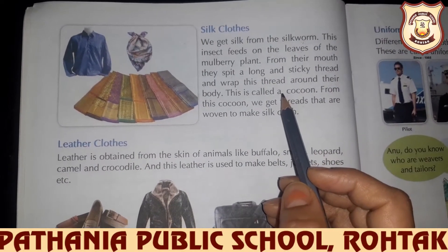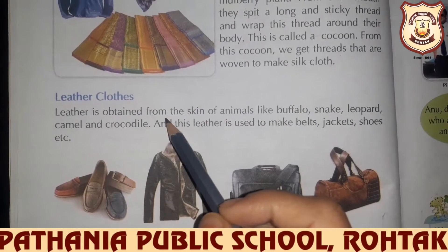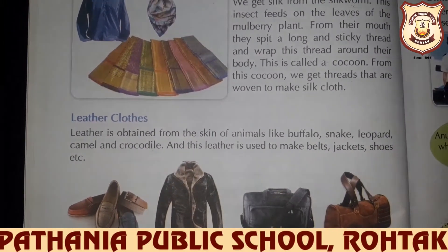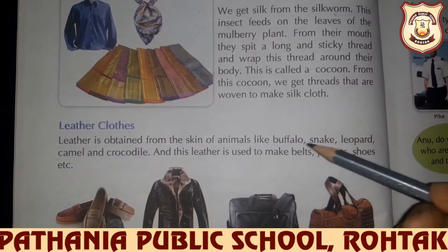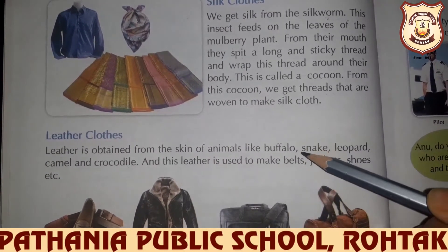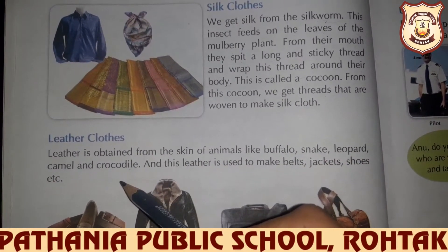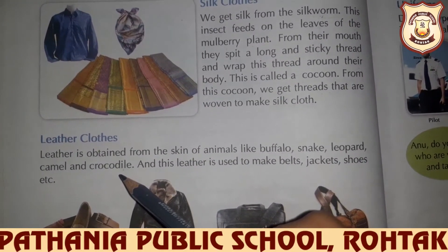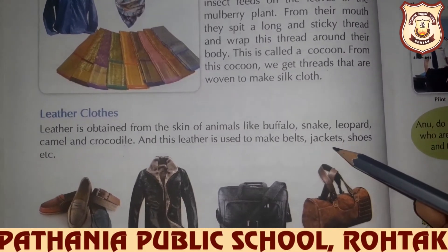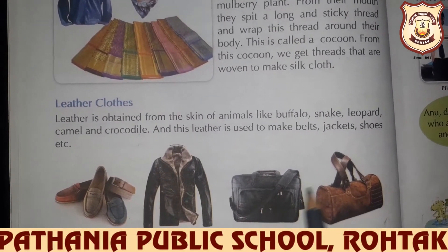Now we have seen how silk clothes are made. Next, let us look at leather clothes. Leather is obtained from the skin of animals like buffalo, snake, leopard, camel, and crocodile. When these animals die, their skin is removed and made into leather. This leather is used to make belts, jackets, shoes, and bags.